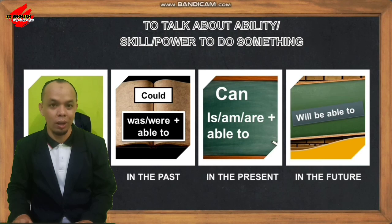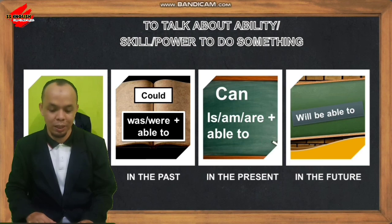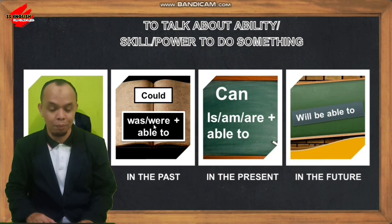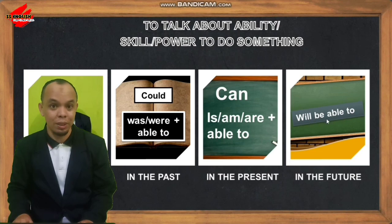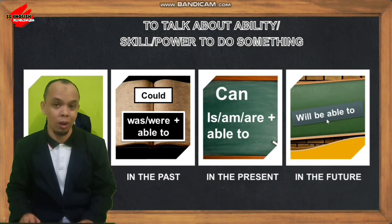Sedangkan bagian yang kedua, kita akan berbicara tentang kemampuan pada masa yang lampau — kita bisa menggunakan kata 'could' dan bisa menggunakan was/were tambah be able to. Dan bagian yang ketiga, nanti kita berbicara tentang 'will be able to' untuk berbicara tentang kemampuan pada masa yang akan datang.